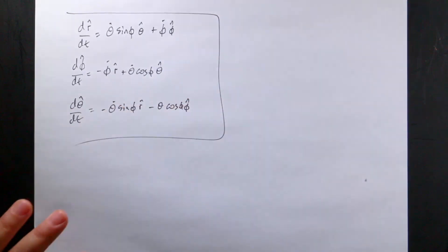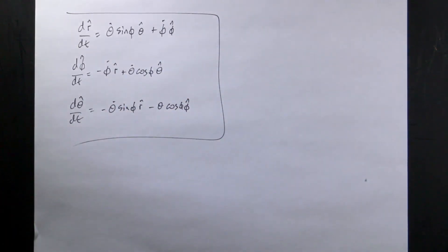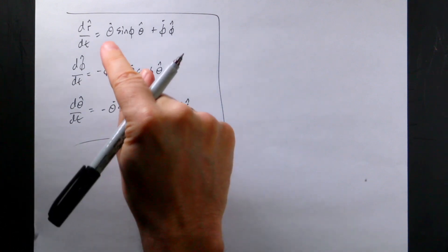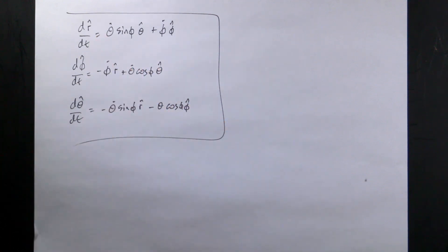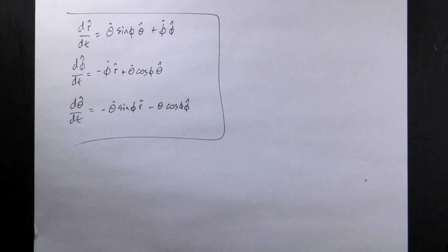And there are your time derivatives of the spherical unit vectors. Now when I write the position vector in spherical coordinates and take its derivative, I can use these results. I'll do that in the next video, which will cover the full position, velocity, and acceleration in spherical coordinates.